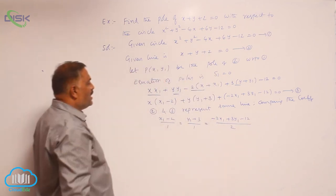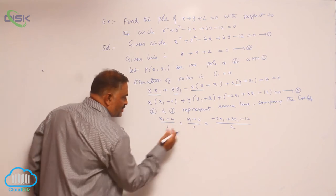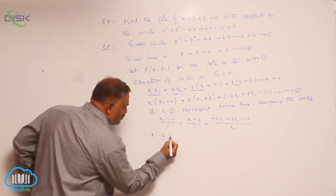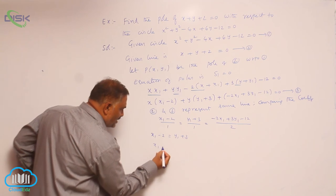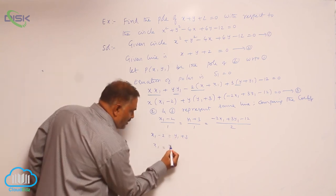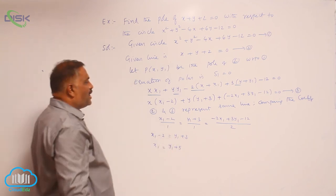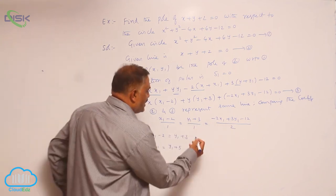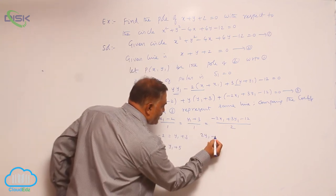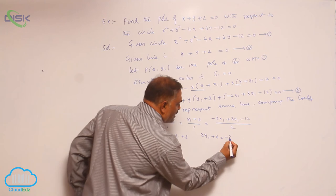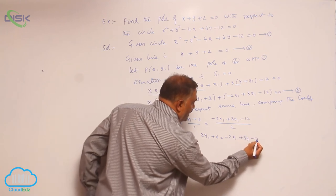Now first take these two: x1 - 2 = y1 + 3, so x1 = y1 + 5. Now take these two: 2y1 + 6 = -2x1 + 3y1 - 12.